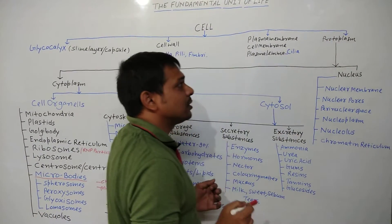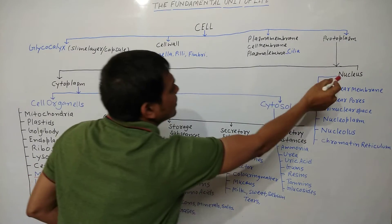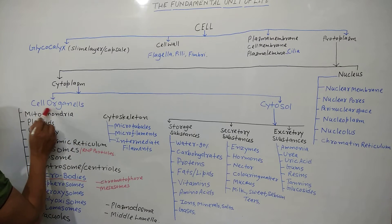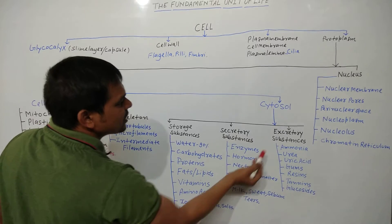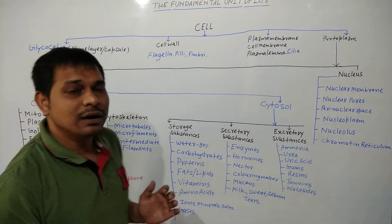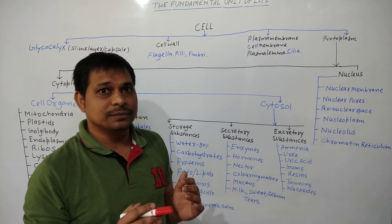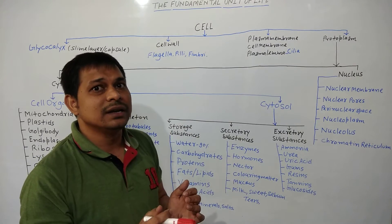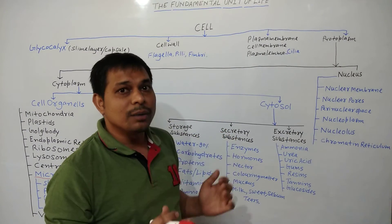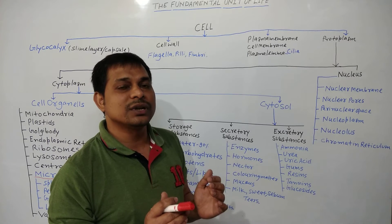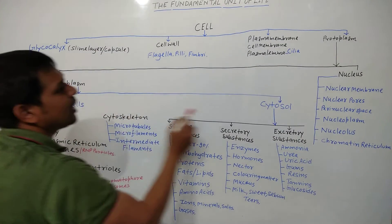Next is protoplasm. Protoplasm includes cytoplasm and nucleus. Cytoplasm includes different types of cell organelles and cytosol. Cytosol includes storage substances, secretory substances, and excretory substances. All the components of a cell held by the cell membrane are known as the protoplasm, and it is divided mainly into cytoplasm and nucleus.